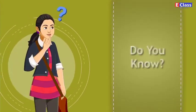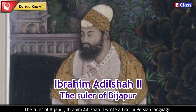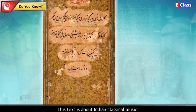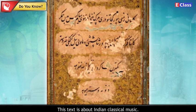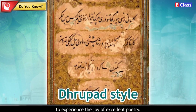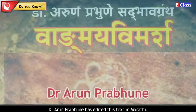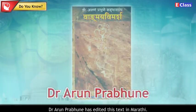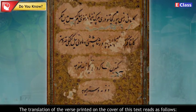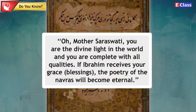The ruler of Bijapur, Ibrahim Adil Shah II, wrote a text in Persian language entitled Kitab-e-Navras, which is about Indian classical music. It includes verses sung in Drupad style and enables the audience to experience the joy of excellent poetry. Dr. Arun Prabhune has edited this text in Marathi. The translation of the verse on the cover reads: 'O Mother Saraswati, you are the divine light in the world and you are complete with all qualities. If Ibrahim receives your grace and blessings, the poetry of the Navras will become eternal.'